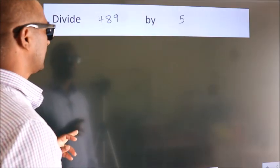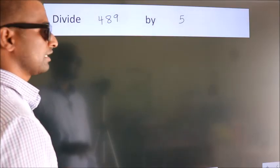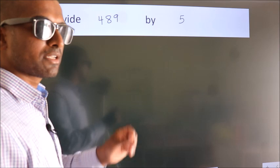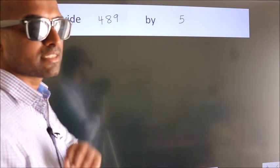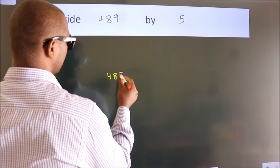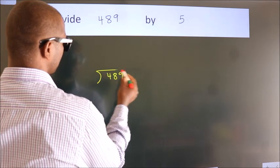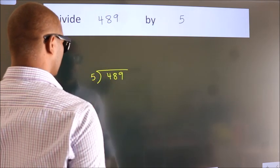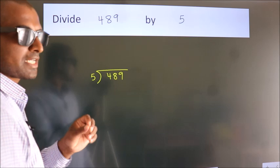Divide 489 by 5. To do this division, we should frame it in this way: 489 here, 5 here. This is your step 1.